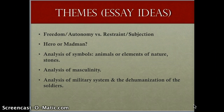Another option: you could choose one symbol or set of symbols and do an analysis of them. For example, you might want to focus on specific animals as symbols in the text. You might want to pick one, like horses, and just follow that all the way through. Or you might want to do horses and birds, or horses, dogs, and rabbits. Narrow it down to which animals you want to talk about as symbols and what they represent.